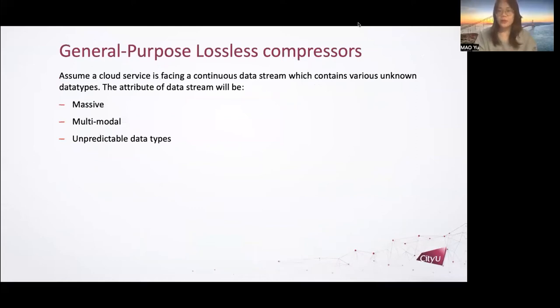And now let's look back at the data stream that flows on the web. Assume a cloud service is facing a continuous data stream which contains various unknown data types. There are three characteristics about this data stream. The data stream would be massive, multi-modal, and the data type is unpredictable.